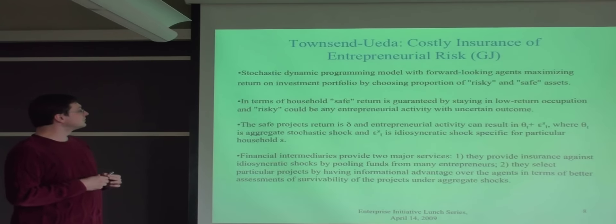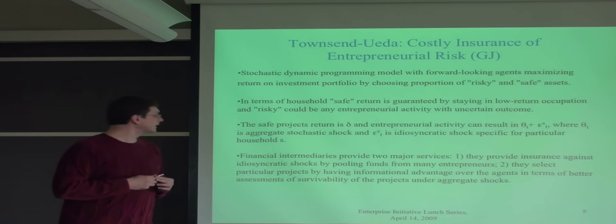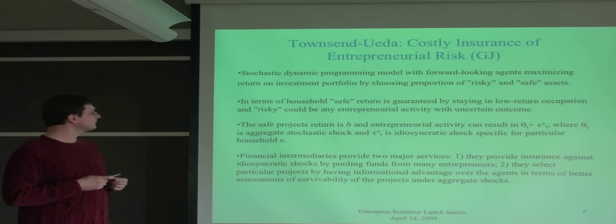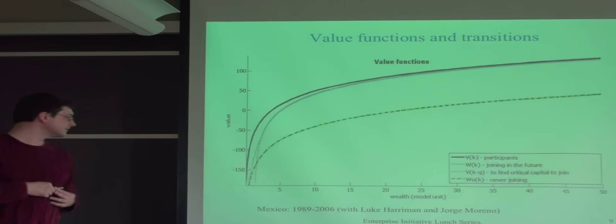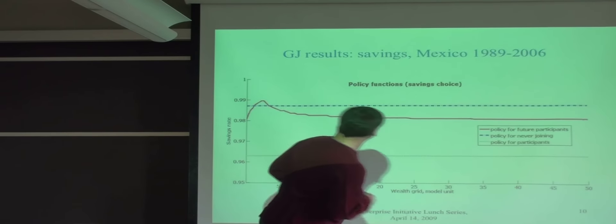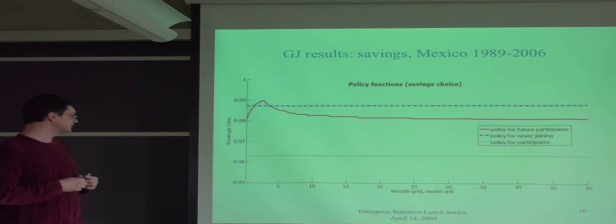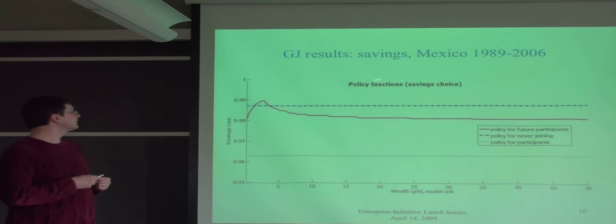This is a thousand-agent model of costly insurance of entrepreneurial risk based on Gringo-Giovanovich model that we are planning to put into some policy method and use. Here's what we did for Mexico recently with Luke Hermann and Joe Corto Moreno. We're using this model. We modeled the development of Mexico from 2000 to 2006. This is the outcome of that, the outcome of the so-called policy function, basically the decisions that people make.